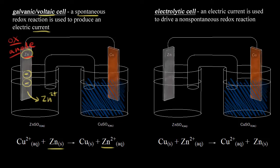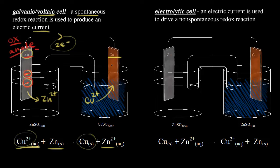The zinc electrode is our source of electrons, so this is our negative electrode, and those electrons move through our wire to produce an electric current. When those two electrons reach our copper electrode, we have copper two-plus ions in solution, and when those copper two-plus ions gain those two electrons, copper two-plus turns into solid copper, forming at our copper electrode.